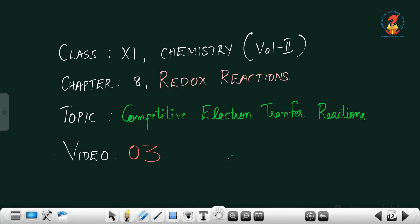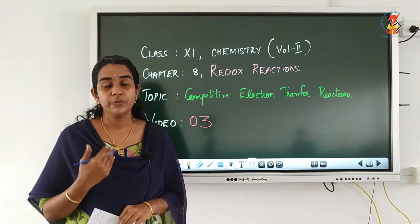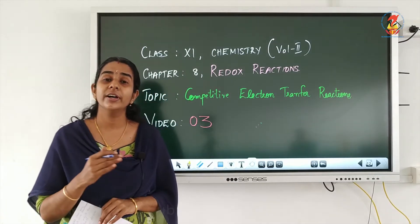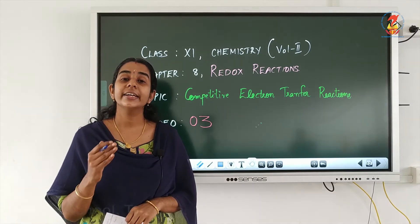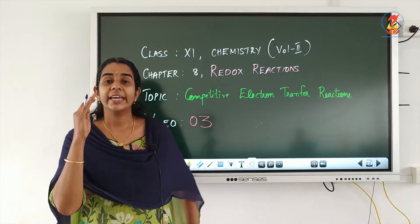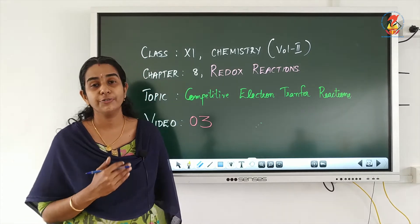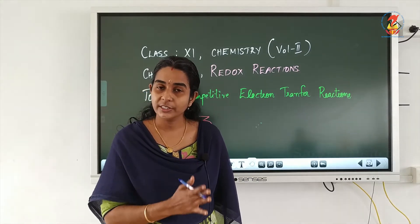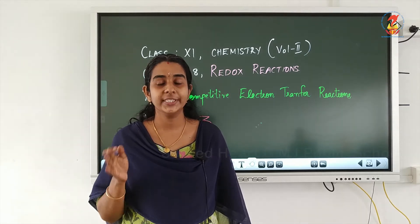In the previous video, we studied about the electron transfer concept of oxidation and reduction. As a conclusion, a redox reaction can be divided into two half reactions: oxidation half reactions and reduction half reactions. That means there will be oxidation, that is losing of electrons, and reduction, that is gaining of electrons, taking place simultaneously.